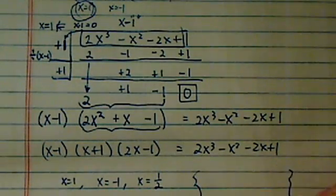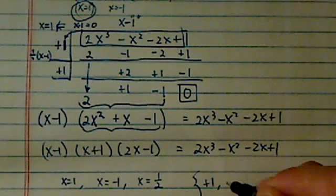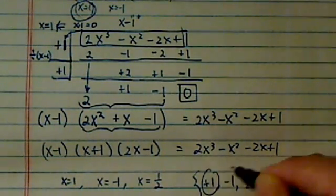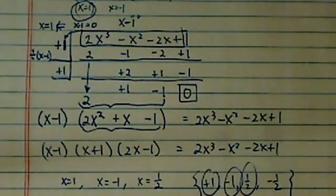Now, remember back in the PQ theorem, the set of candidates is plus 1, minus 1, half, and minus half. And sure enough, we found all three here.